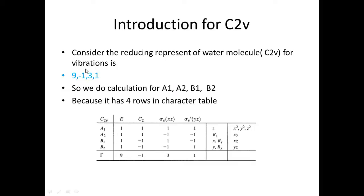How do we convert irreducible representation from the reducible? Reducible means which can break — 9, -1, 3, 1 are breakable. These are irreducible; these we cannot break further. A1, A2, B1 in the character table — these are the irreducible representations. All entries in the character table are irreducible, meaning they cannot be broken.